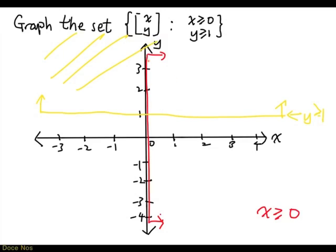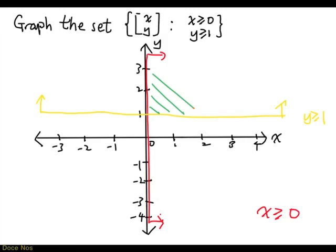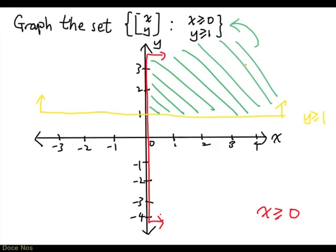This red line with two arrows pointing to the right indicates that we are looking at points with x greater than 0. And this yellow line with two up arrows indicates the points we are interested in with y greater than or equal to 1. So our answer would be this shaded part, which represents the set of (x, y) with x greater than 0 and y greater than or equal to 1.